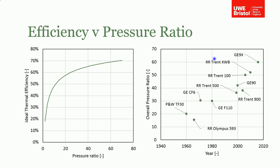There is obviously a limit to the pressure ratio achievable in a gas turbine. You get better thermal efficiency theoretically, but you have to be able to build a machine that can withstand those pressures. Engineers are constantly pushing the boundaries of what's possible from a materials standpoint in order to build devices capable of sustaining these very high pressure ratios.